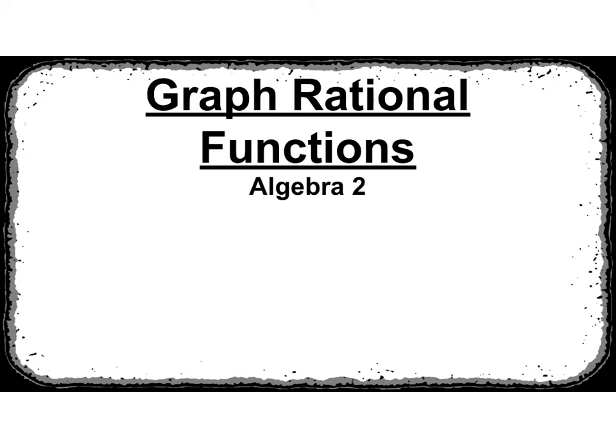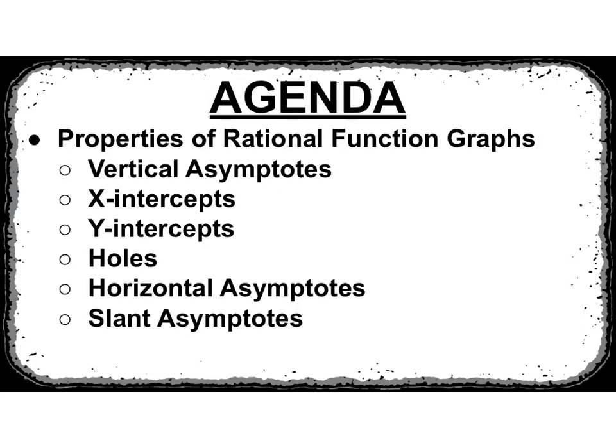Let's learn how to graph rational functions. On our agenda, we're going to look at the properties of rational functions, and there are a lot of them: vertical asymptotes, x and y-intercepts, a new thing called holes, horizontal asymptotes, and a new thing called slant asymptotes.